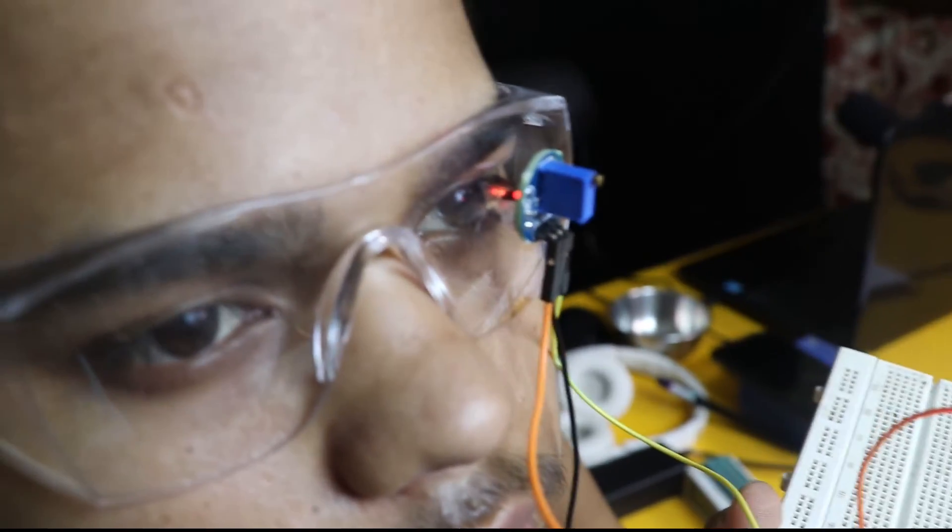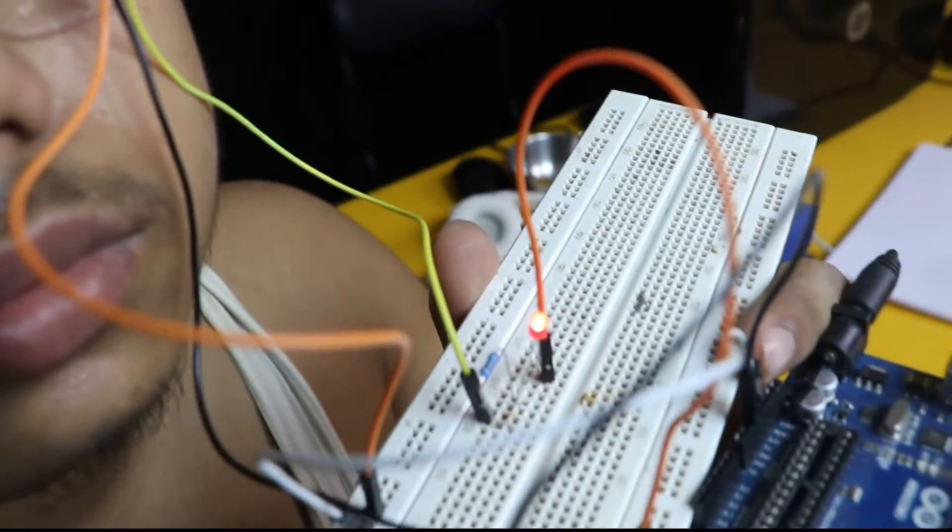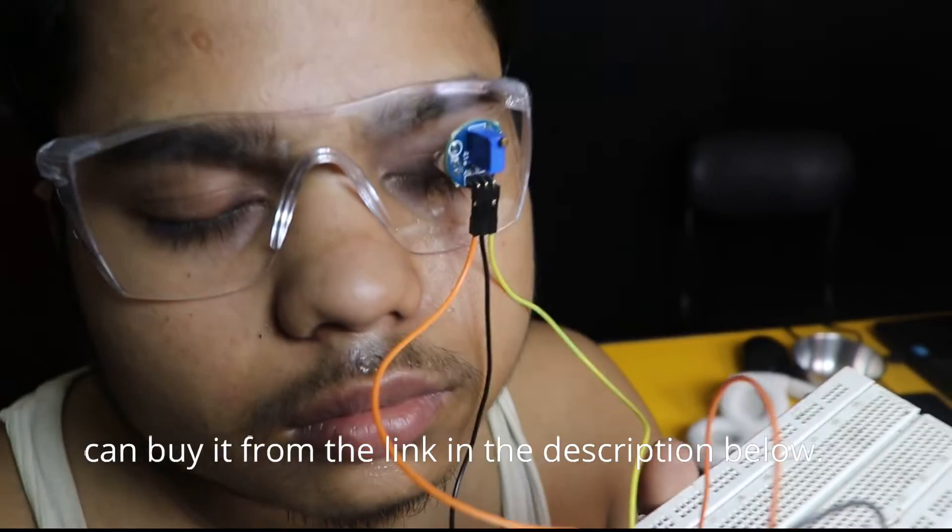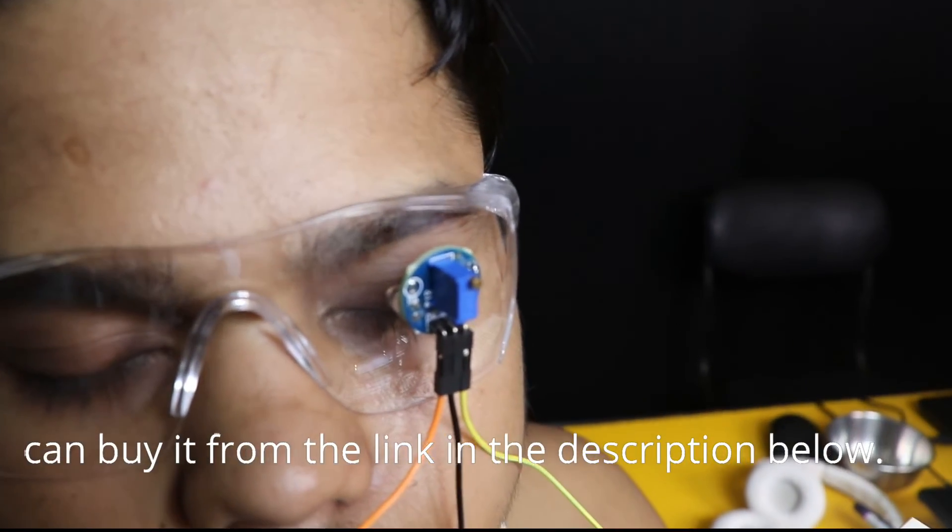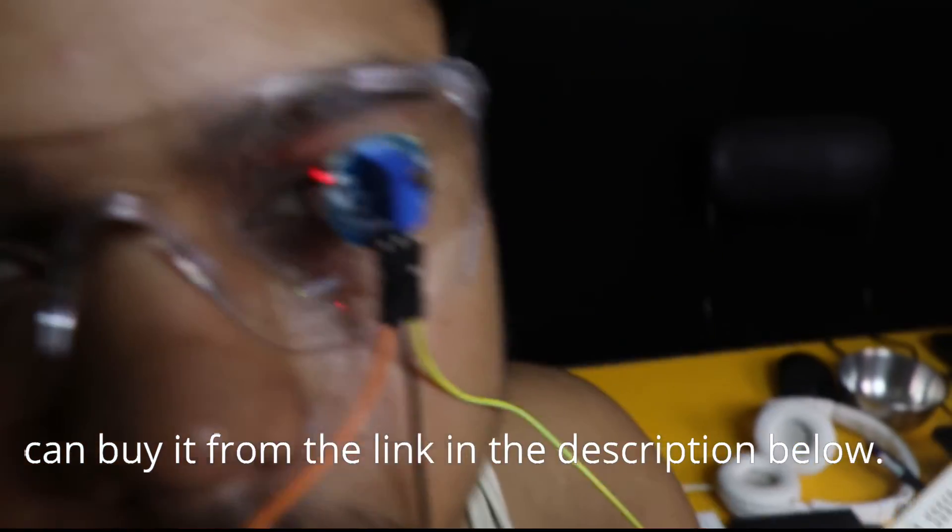Now let me show you the live working of eye blink sensor on human eye. I have put the goggles on my eyes. You can see the sensor LED is on and the breadboard LED is on because eyes are open. As soon as you close your eyes, the LED is off on the breadboard and on the eye blink sensor. As soon as you open your eyes, the LED will be on. Working is very accurate and smooth.